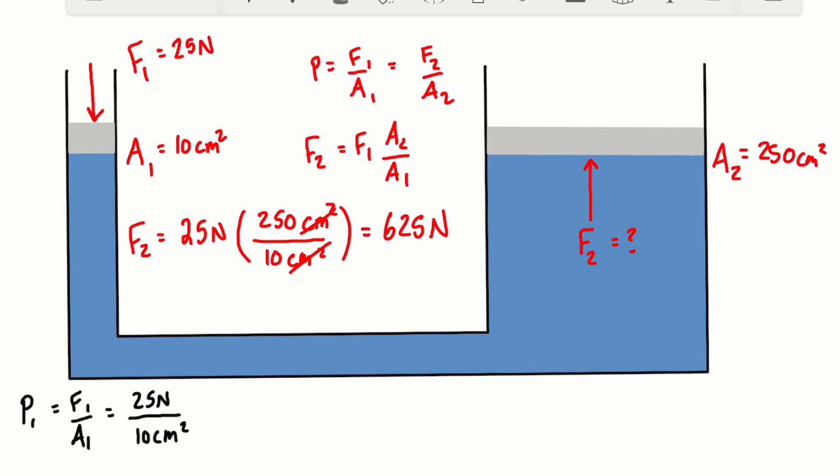But we're looking for units of pascals, which is newtons per meter squared. So we're going to have to convert the centimeter squared. We'll just multiply it by unity, which is 10,000 centimeters squared over one meter squared. This is just a ratio. This whole thing is just equal to one. So the centimeters are going to cancel out, and we're left with newtons per meter squared.